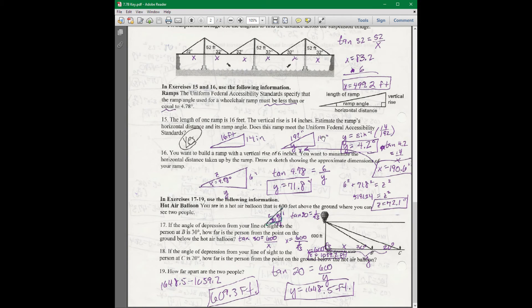They want to know, does it meet the standards for the uniform federal accessibility standards? So I got to find what this angle is. It needs to be less than 4.78. I use the inverse sine. I get 14 over 192. Take the inverse sine of that. You get the angle. It's 4.2 degrees. So 4.2 degrees is less than 4.78. So yes, it meets the standards. It says estimate the horizontal distance. So that's what I did here. 190.6 inches.